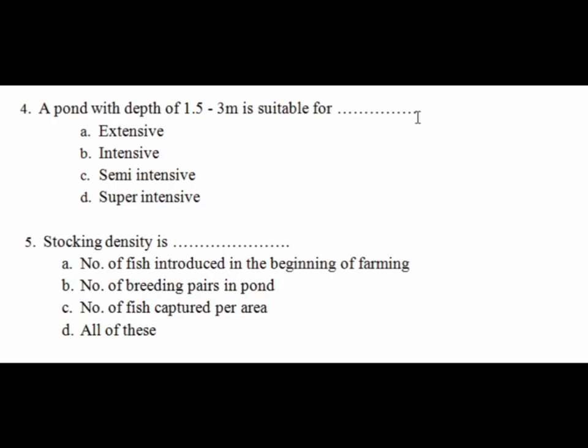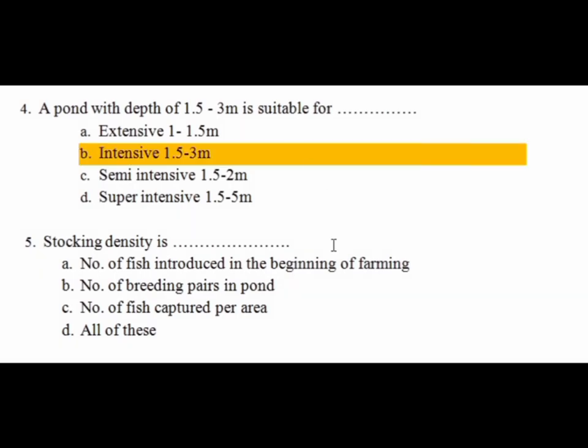Question 4: A pond with a depth of 1.5 to 3 meters is suitable for which system? Extensive aquaculture uses a pond depth of 1 to 1.5 meters. Semi-intensive uses a depth of 1.5 to 2 meters. A depth of 1.5 to 3 meters corresponds to intensive farming. So the answer is Option B — intensive farming system.